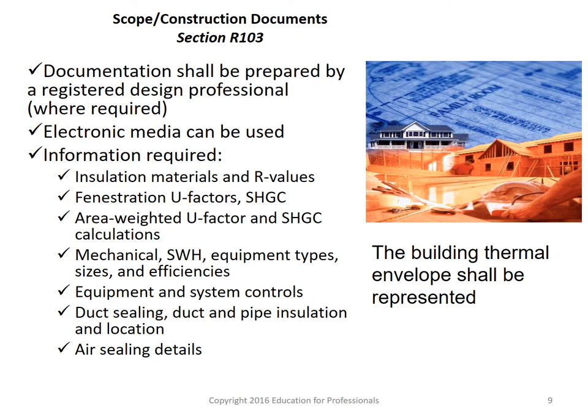Duct sealing was always required in the past, as were fenestration U-factors and SHGC — SHGC meaning Solar Heat Gain Coefficient. If you look at your window labels, or obtain cut sheets from the manufacturer, they will tell you the SHGC and U-factor values. It's similar to the R-values you find on insulation — it tells you how much solar heat is coming through the window and warming the interior.